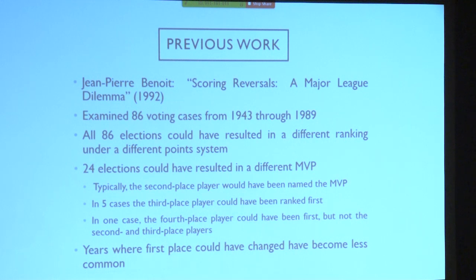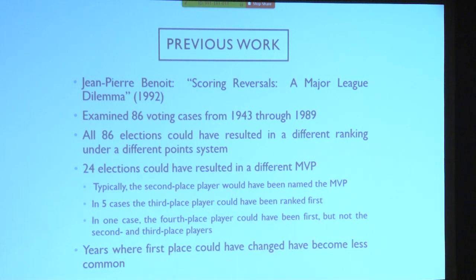In 1992, Jean-Pierre Benoit published a paper in an economics journal. He looked at all MVP voting from 1943 when it began through 1989, and asked: instead of the 14-9-8-7-6 point scheme, what if we applied a different one? He took away the big gap or made different gaps in other places. He found that in all 86 cases, the order of the MVP finalists would have changed, and in 24 elections, the person named MVP would not have been named MVP under a different system. Most of the time a second-place player would have risen to first. In five cases the third-place player could have become MVP, and in one case a fourth-place player moved up.